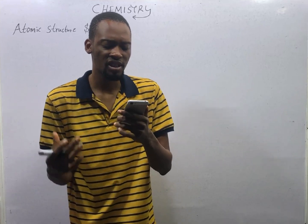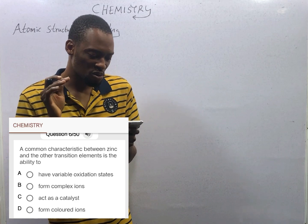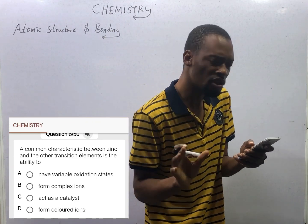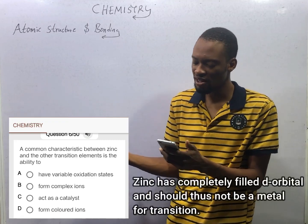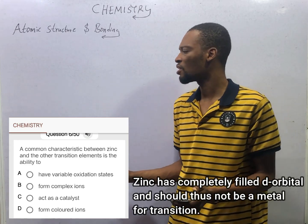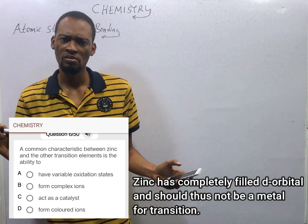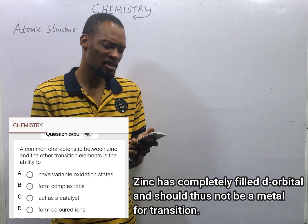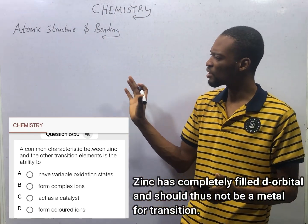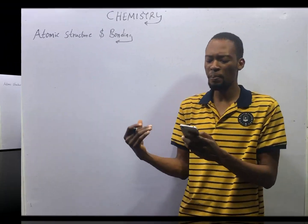A common characteristic between zinc and the other transition elements is the ability to form complex ions. Transition elements generally have variable oxidation states, electrons in the d-orbitals, they form complex ions, they act as catalysts, and they form colored ions. But zinc doesn't have all these properties — zinc is a metal with oxidation state +2. Zinc can form complex ions, so that is the characteristic or similarity between zinc and the other transition metals.